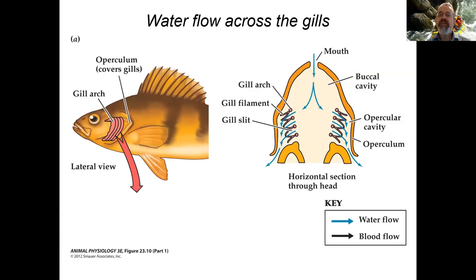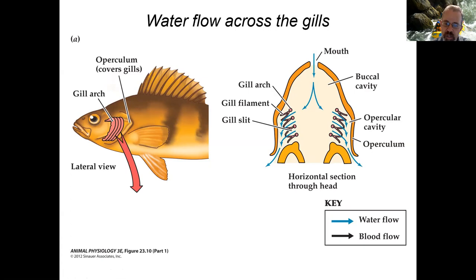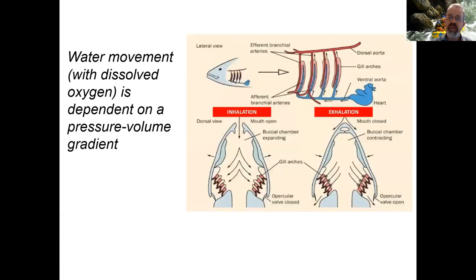Here's another view showing the mouth of the fish — the oral cavity, sometimes called the buccal cavity — with the gills on either side, covered by what's known as the operculum, like a flap. Water enters through the oral cavity and is forced over the gill filaments. Blood goes in the opposite direction — counter-current — and oxygen is moved from the water into the blood. Why does the fish have this counter-current mechanism?